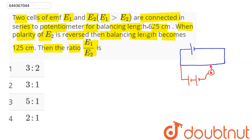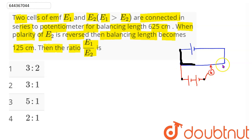In the balancing condition, the current flowing through the potentiometer wire will not flow through the secondary circuit, as the potential difference between these two points will be equal to the potential difference between the other two points. Since these potentials are equal, there is no potential difference across the galvanometer, hence no current flows through it.